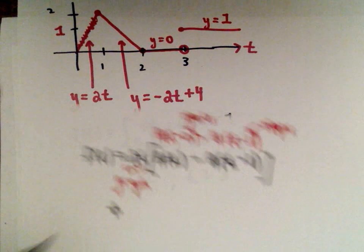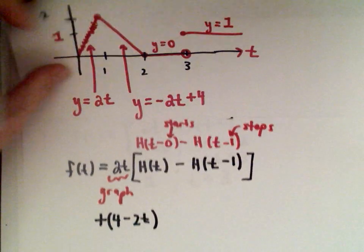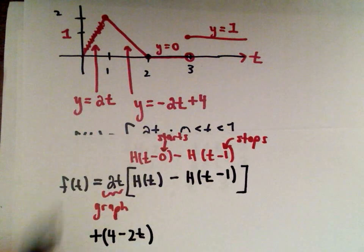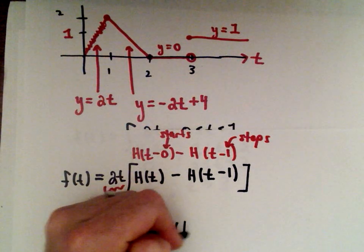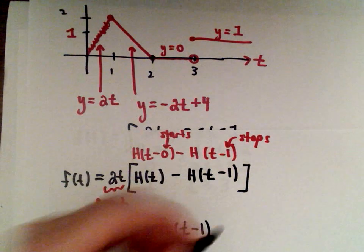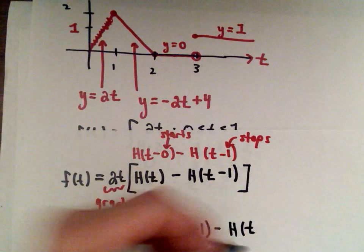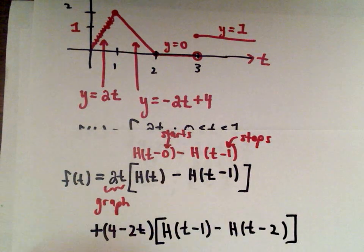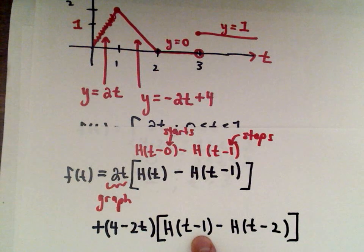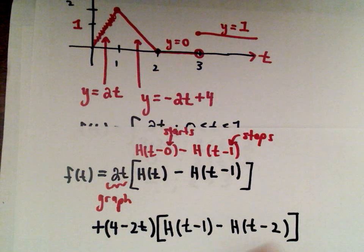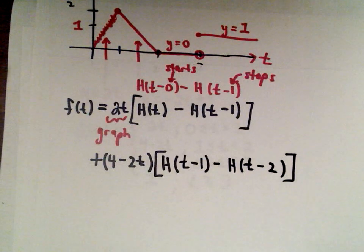And now we'll just do the same thing, so the next one, well that's 4 minus 2t. So that's my section of the graph that came next, 4 minus 2t. And then I just do the same thing. So this is going to start at t equals 1, and this goes up to the value of t equals 2. So that would be my next expression. So again I've got my section of the graph, it starts at the value t equals 1 and goes up to t equals 2. And again I know you see negatives in here, but think about the opposite sign, so it starts at 1, stops at 2.